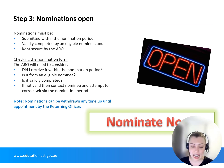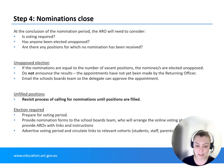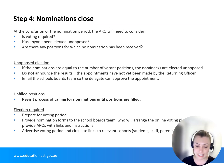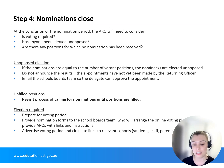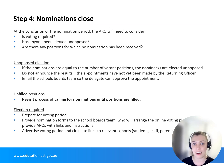If a nomination is not valid, the ARO must attempt to contact the nominee as soon as practicable to inform them and give them the opportunity to resubmit prior to the closure of the period. If the number of valid nominees is less than or equal to the number of positions to be filled, the names of all nominees are submitted to the returning officer for appointment. If nominees exceed positions available, an election must be conducted commencing one week after the closure of nominations. If nominees are insufficient to fill all positions, the ARO must proceed with available appointments and undertake a further call for nominations for any remaining vacancy — contact us if that occurs.